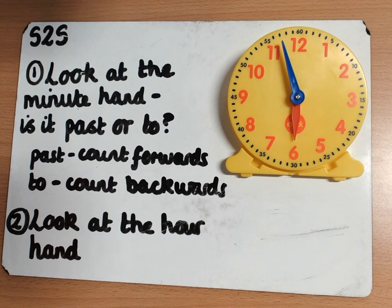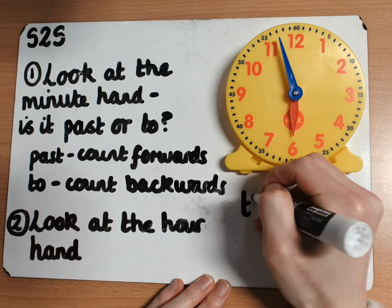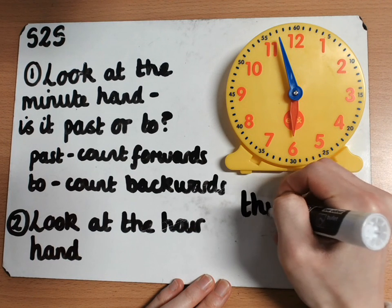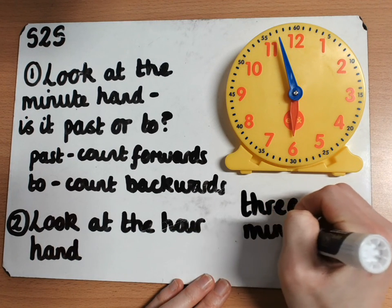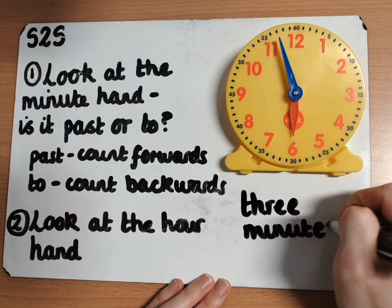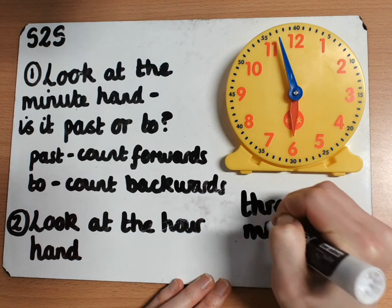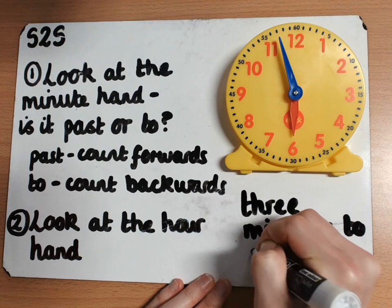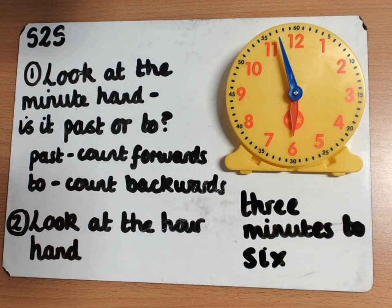Let's take a look at my hour hand for step two, and it's at the six — pointing pretty much at it — because it is only three minutes to six. So three minutes to six.